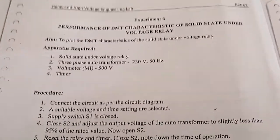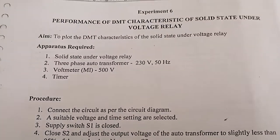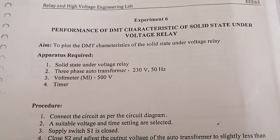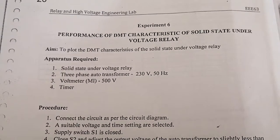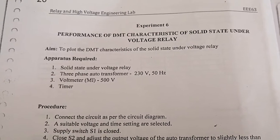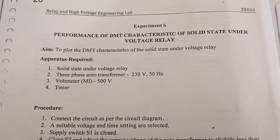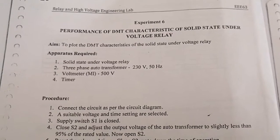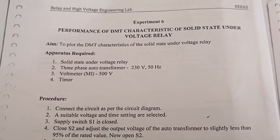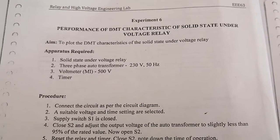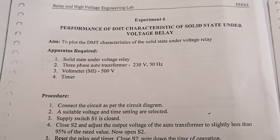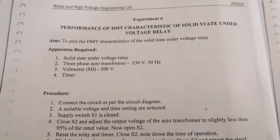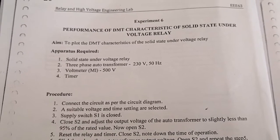The aim of this experiment is to plot the DMT characteristics of a solid state under voltage relay. DMT means Definite Minimum Time characteristics. Whatever is the value of the fault current, the time taken by the relay is always constant.